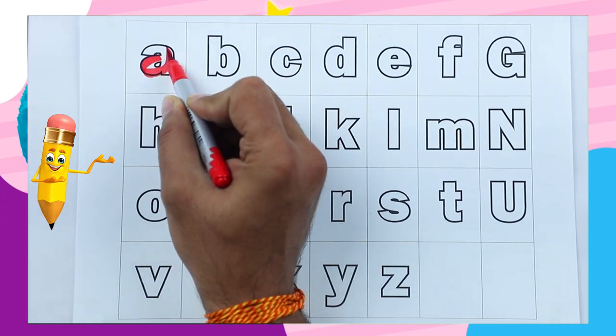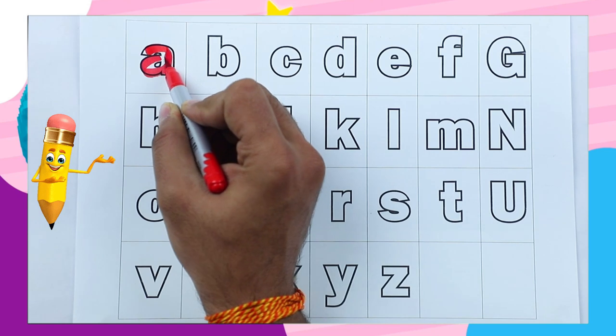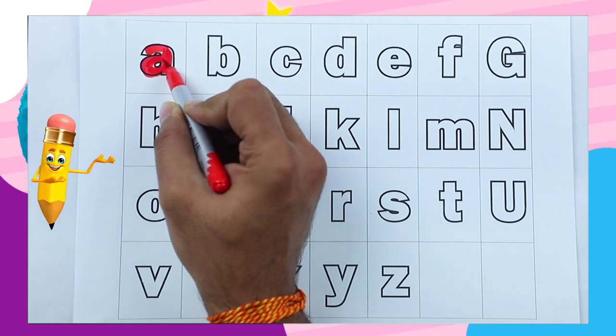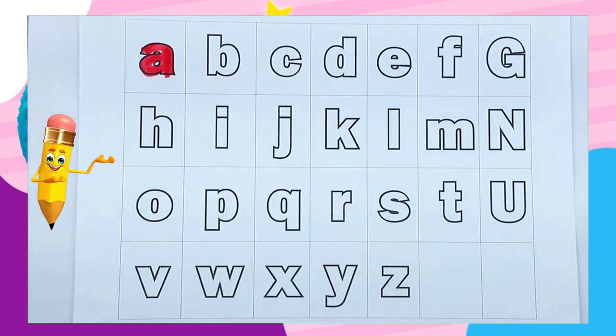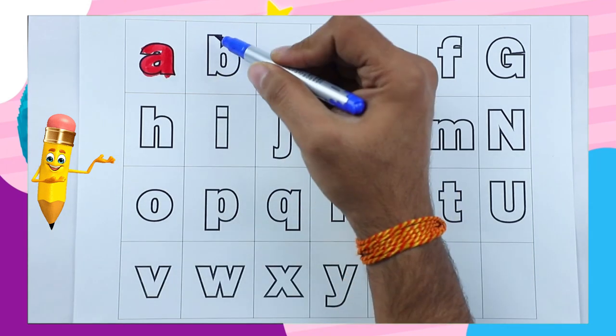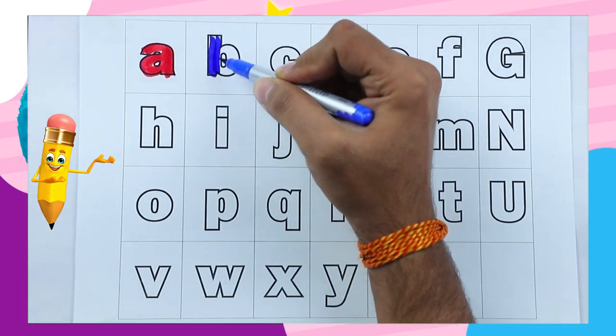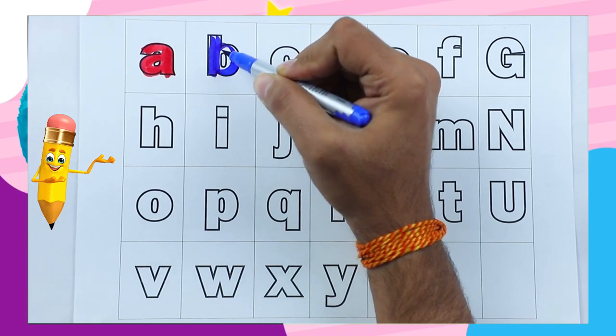Small a, this is small a. A for apple. Small b, b for ball.